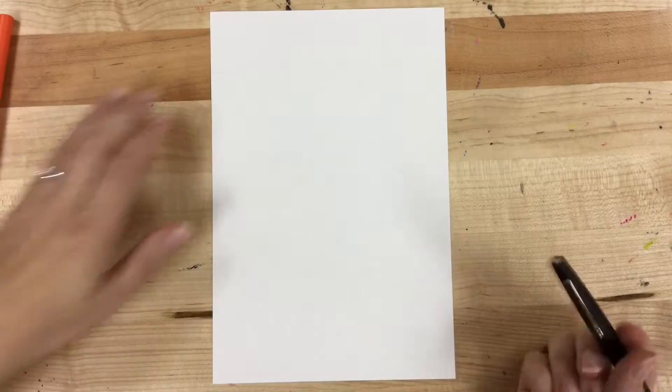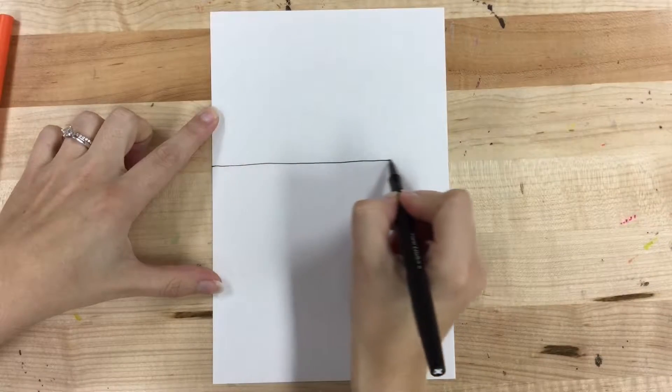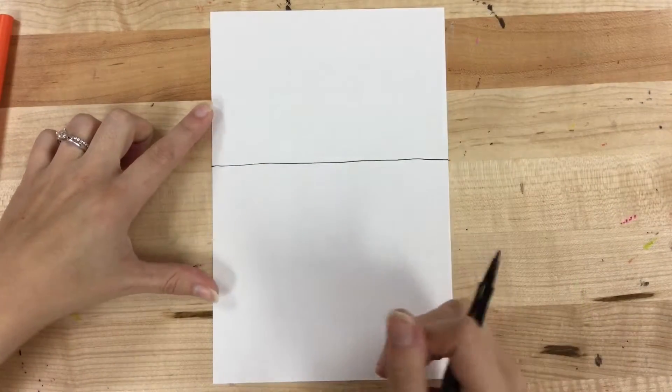For your pattern and contrast mini project page, start with a 6 by 9 inch piece of paper and divide it almost in half. So my top is slightly smaller than my bottom.